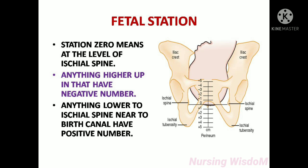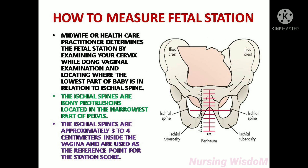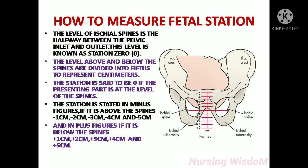To measure fetal station, a midwife or healthcare practitioner determines the fetal station by examining the cervix while doing a vaginal examination and locating where the lowest part of the baby is in relation to the ischial spine. The ischial spines are bony protrusions located in the narrowest part of the pelvis, approximately three to four centimeters inside the vagina, and are used as the reference point for the station score.